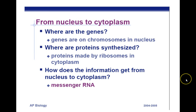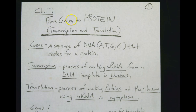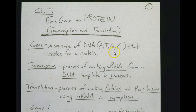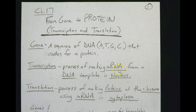We're going to stop at this point and get some general definitions for Chapter 17, From Gene to Protein — Transcription and Translation. A gene is a sequence of DNA — A's, T's, G's, and C's — usually hundreds if not thousands of nitrogen bases long, that codes for a protein. Transcription is the process of making messenger RNA (mRNA) from a DNA template in the nucleus. Translation is the process of making proteins at the ribosome using messenger RNA in the cytoplasm.